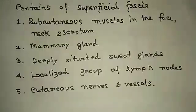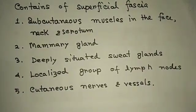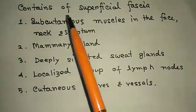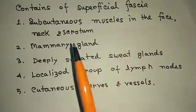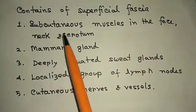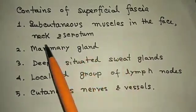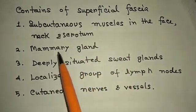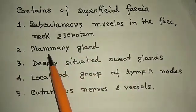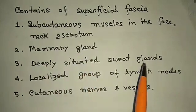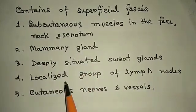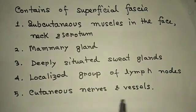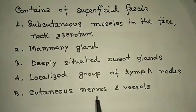The content of the superficial fascia: it contains subcutaneous muscles in the face and neck, some glands including mammary glands and deeply situated sweat glands, localized groups of lymph nodes, and cutaneous receptors.